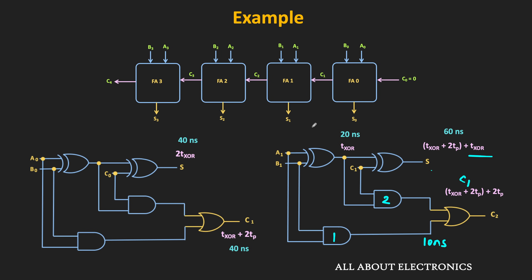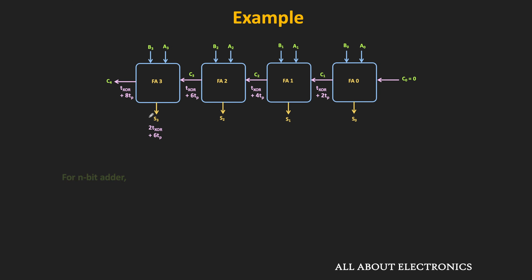Generalizing: C1 is available after Txor + 2×Tp. Once C1 is available, C2 is available after two more gate delays, giving Txor + 4×Tp. Once C2 is available, FA2 generates C3 after two more gate delays: Txor + 6×Tp. Similarly, FA3 generates C4 at Txor + 8×Tp. Once C3 is available, S3 is generated after one more XOR delay, so S3 is available at 2×Txor + 6×Tp.